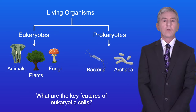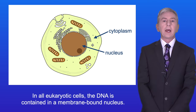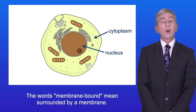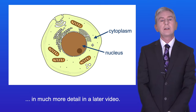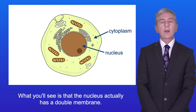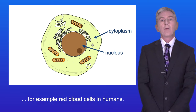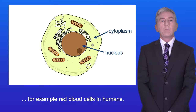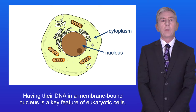So what are the key features of eukaryotic cells? I'm showing you here the general structure of a typical animal cell. In all eukaryotic cells the DNA is contained in a membrane-bound nucleus, and the words membrane-bound means surrounded by a membrane. The nucleus actually has a double membrane. Now strictly speaking some eukaryotic cells can lose their nucleus as they develop, for example red blood cells in humans, but the vast majority of eukaryotic cells have a nucleus throughout their lifespan. So having their DNA in a membrane-bound nucleus is a key feature of eukaryotic cells.